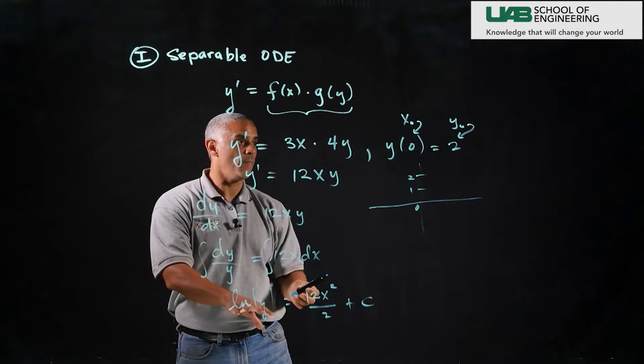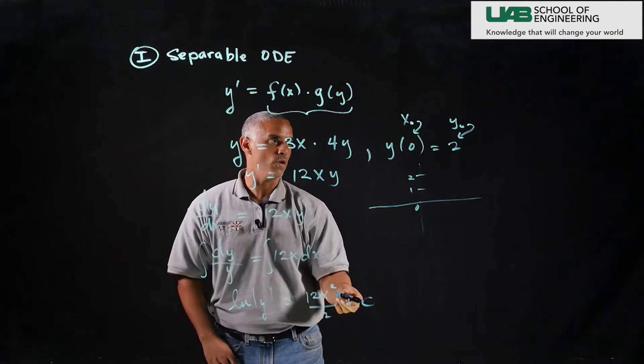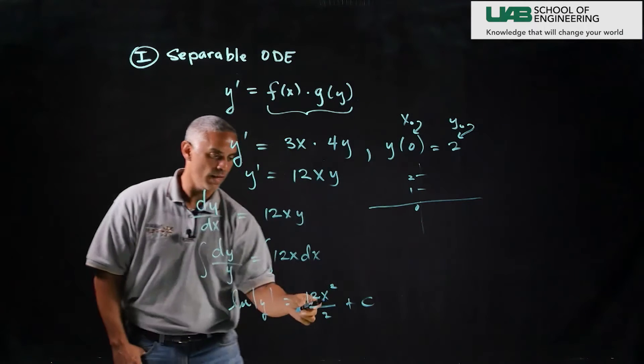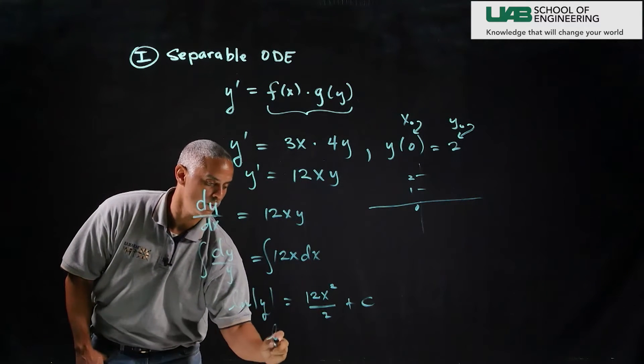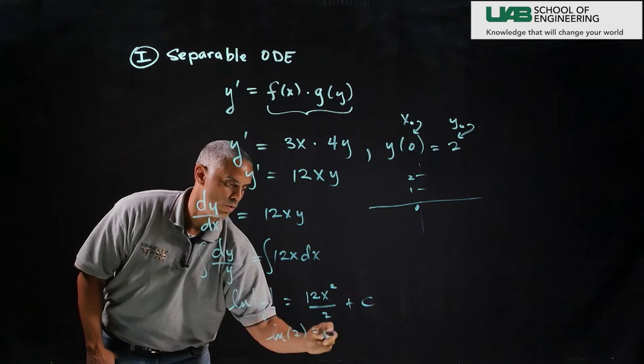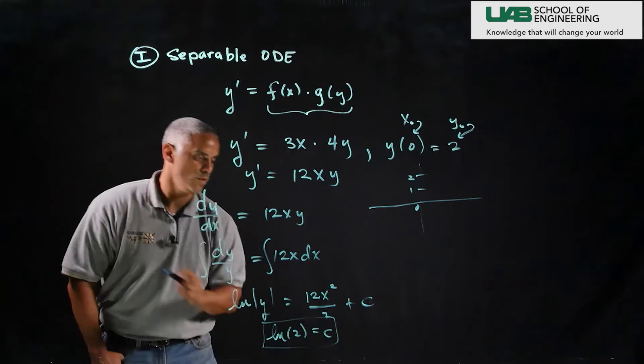So if I apply my initial condition I should be able to solve for c. If I plug in x is 0 this term goes away and I end up with the natural log of 2 is equal to my constant.